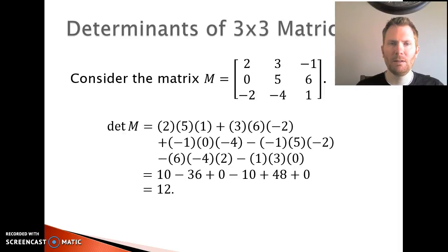Here's an example of finding a determinant. There's matrix M. You can see it has its nine entries in there, and so the determinant is found by 2 times 5 times 1, that's the main diagonal, plus 3 times 6 times negative 2, plus negative 1 times 0 times negative 4. Those are the columns that go down as you move from left to right. Then you subtract off the diagonals that go down as you go from right to left. Add it all up, 12 is the determinant of that matrix.